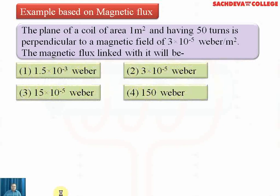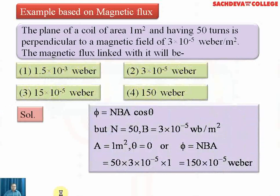Four options are given and we have to select the right option. When we solve this question, we find phi must be written as N·B·A·cosθ, where N is the number of turns. If no number of turns is given, we assume it is a single turn. But in our question, the number of turns is given as 50, so we use N·B·A·cosθ.